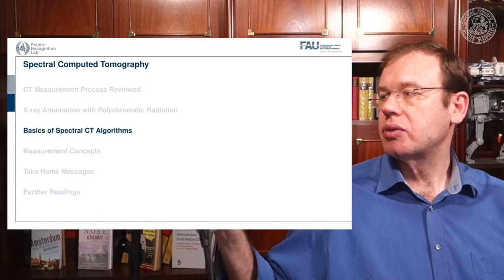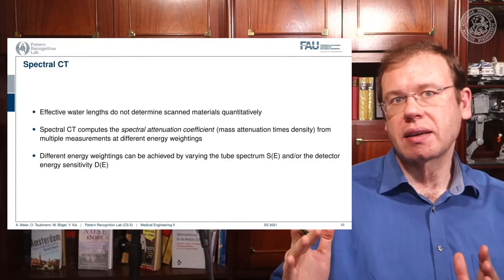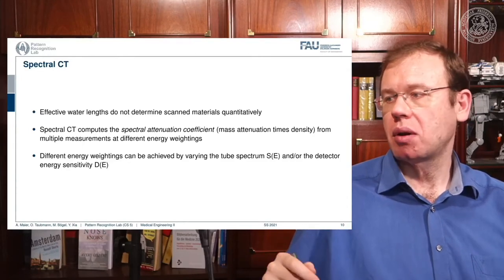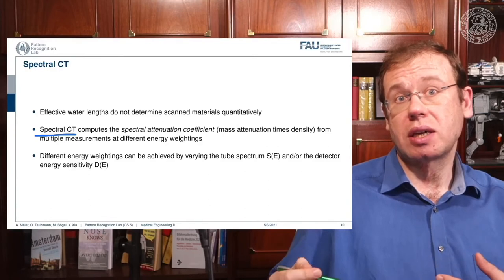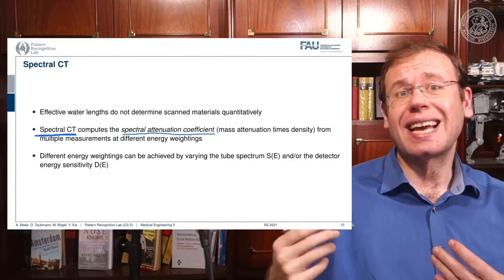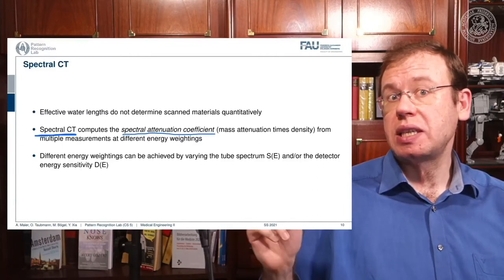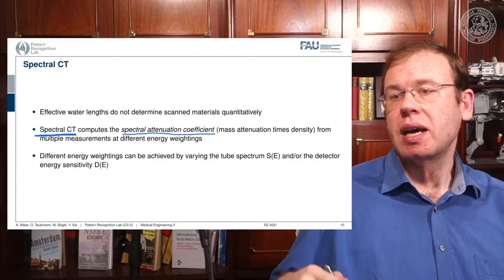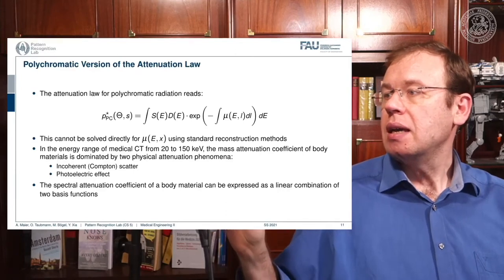This brings us to the idea of spectral CT. In spectral CT, the idea is not just to measure a single energy or a single mixture of energies, but to have multiple measurements — we kind of measure the spectrum, essentially the spectrum of energies of our photons. Then we can determine the spectral, energy-resolved attenuation coefficients, and if we find a good way to decompose them, we should be able to figure out how much of a specific material was on the path.